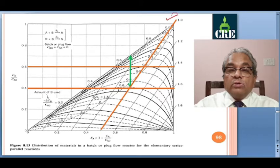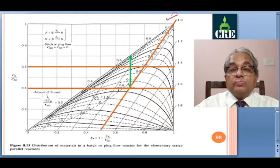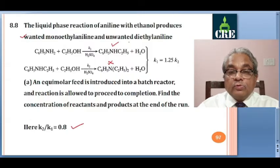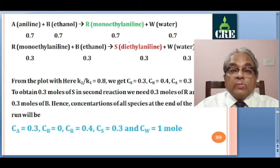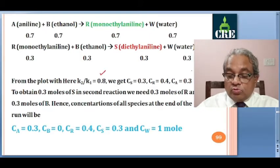We draw the line of slope 2 overlapping the line for delta CB by CA0 equal to 1 in the graph, and K2 by K1 is given as 0.8. The point of intersection on the curve showing K2 by K1 equal to 0.8 represents CR here, and CR by CA0. From there to the diagonal is CS, and remaining is CA. At K2 by K1 equal to 0.8, CS equals 0.3, CR equals 0.4, CA equals 0.3.